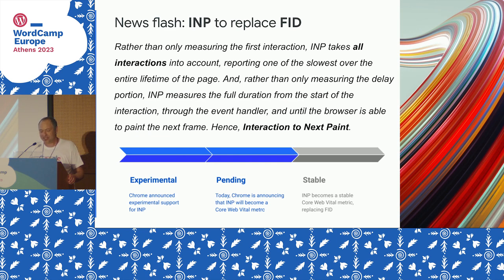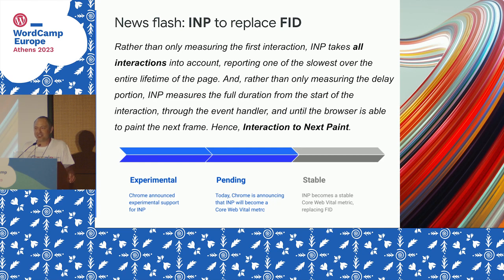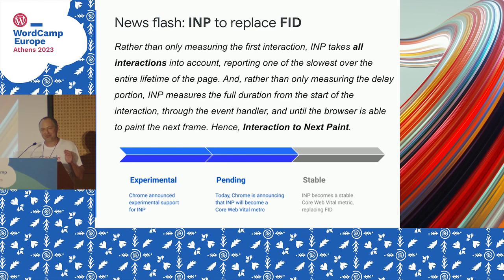Those are measured right now with LCP, FID, and CLS, and blocking can impact all of these metrics. One important note: FID is going to be replaced by a new metric called INP — this was just announced a couple of weeks ago. Something like 95% of WordPress sites pass Core Web Vitals for the FID metric, which sounds good, except it doesn't help you make your site any better. With the new INP metric, the goal is not to measure the first interaction of the user, but all of the interactions over the life of the page. It's again trying to measure how quickly the page responds to user input, and it's going to be critical to address blocking for this metric.